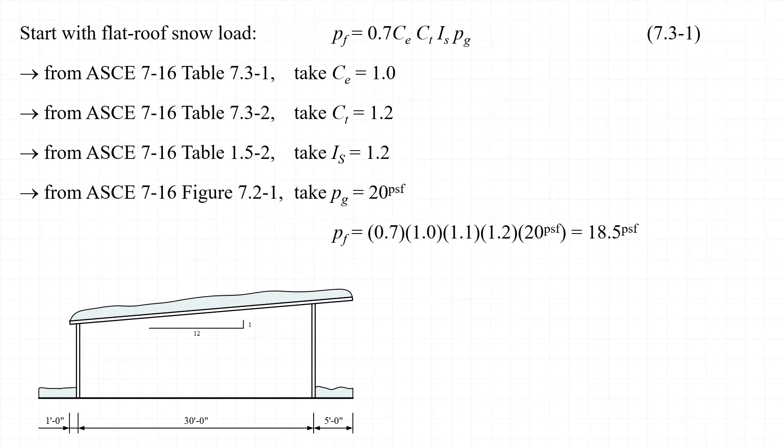Substituting all of these variables into our equation, we find that the flat roof snow load for our structure would be 18.5 pounds per square foot.